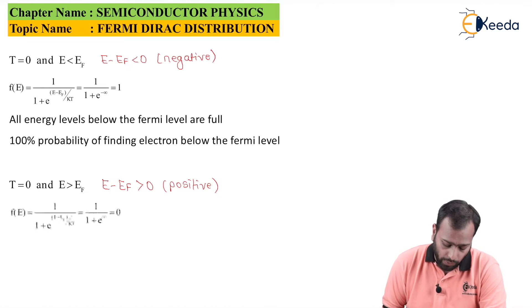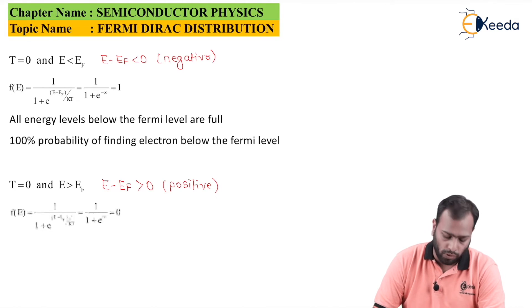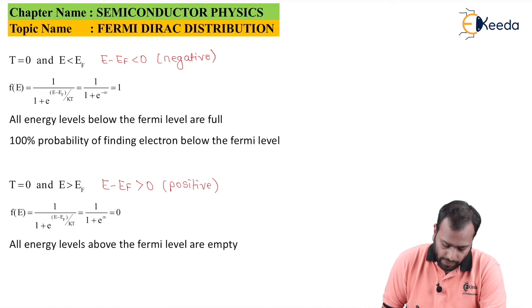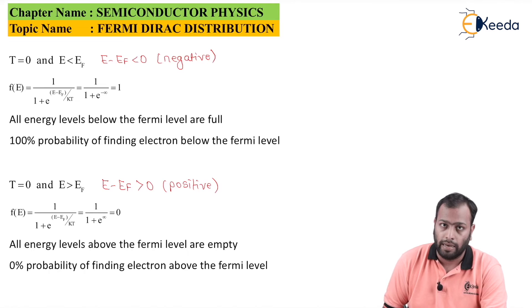Here the only difference from the previous is in this case your value will be equal to positive infinity, since the term E minus EF is greater than 0. We all know that e raised to infinity is nothing but infinity, and 1 upon infinity will give me a probability of 0, which means that there are no electrons found above the Fermi level. All energy levels above the Fermi level are empty, and there is of course 0% probability of finding electrons above the Fermi level.